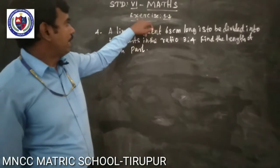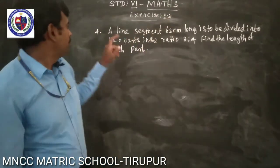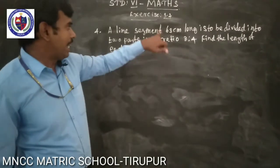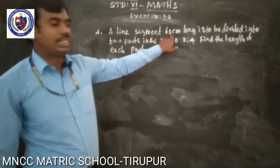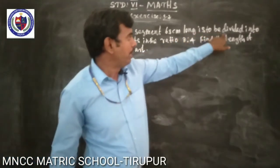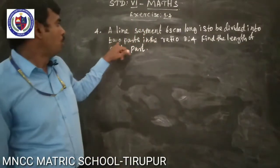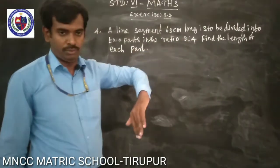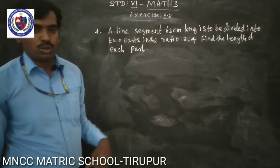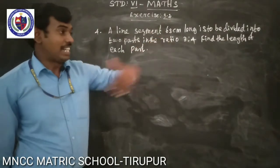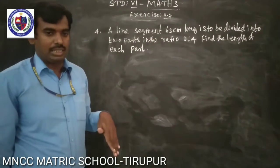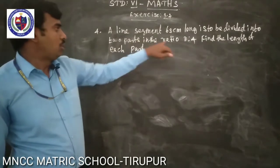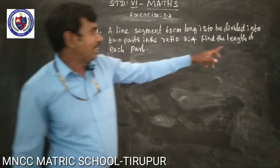Good morning, friends. XI352. A line segment 63 cm long is to be divided into 2 parts in the ratio 3 is to 4. Find the length of each part.